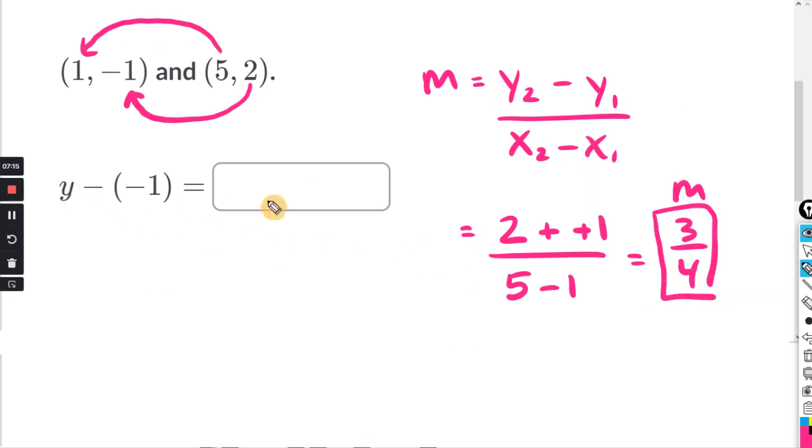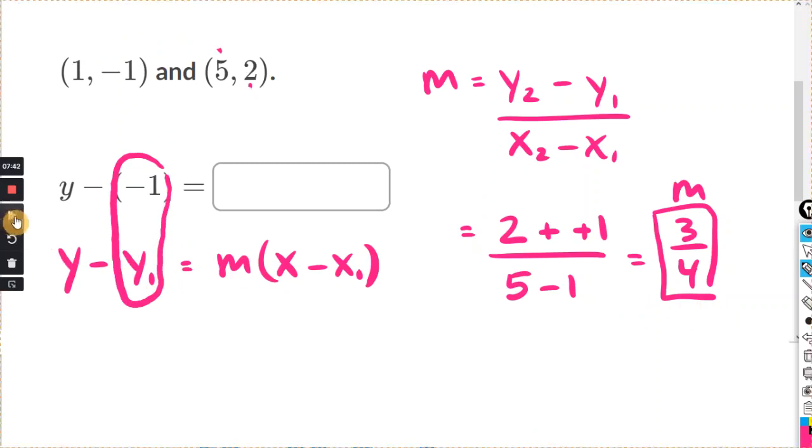Now match this equation with the point slope equation. y minus y1 equals m times x minus x1. So here we have y minus negative 1. So clearly we can see that y1 is negative 1. If y1 is negative 1, which one has negative 1 for the y? Well, clearly that's this one right here.